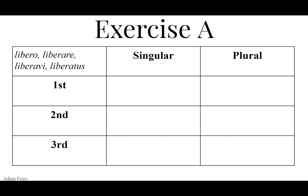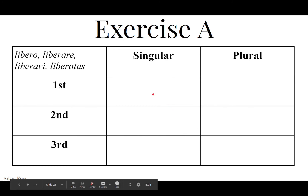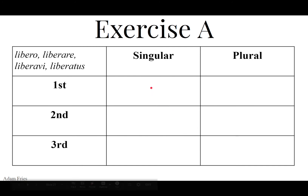Let's move on to libero, liberare, liberavi, liberatus — to free, to set free. We want the perfect tense: third principal part, chop off the I, liberav is the perfect stem, and then add the endings. Liberavi, liberavisti, liberavit, liberavimus, liberavistis, liberaverunt.